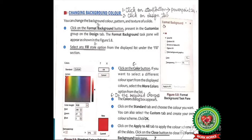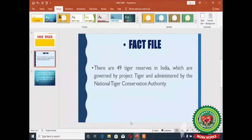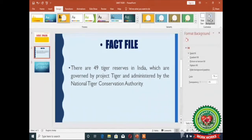Now I am going to show you practically how to change the background color of the slide. To change the background color, click on the Design tab. In the Customize group there is an option 'Format Background' — click on it. The Format Background task pane will appear. Here you can select any fill style option: solid fill, gradient fill, picture or texture fill, pattern fill, etc. By default, solid fill is selected.